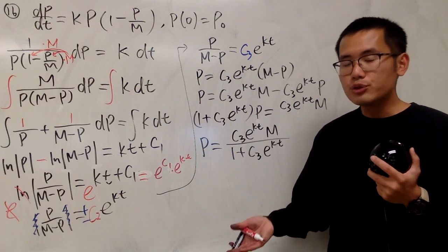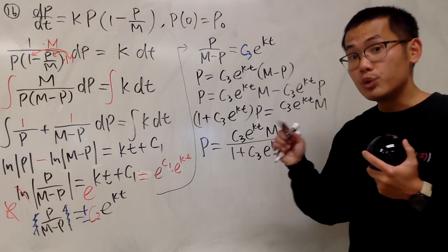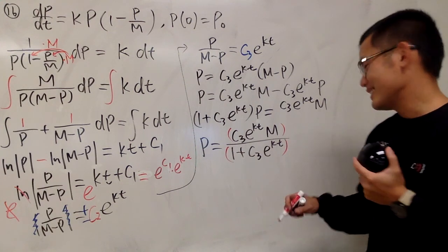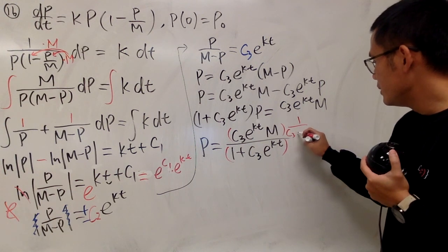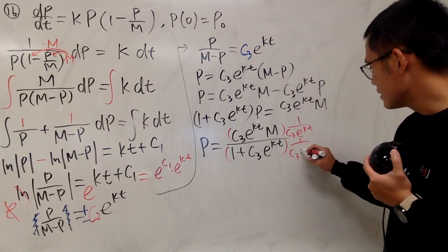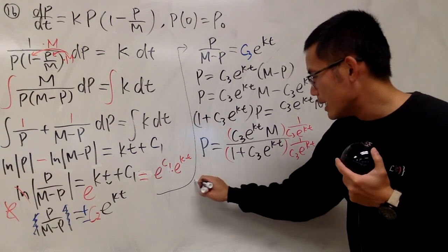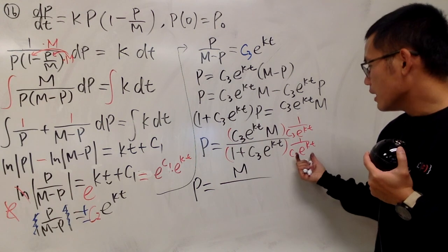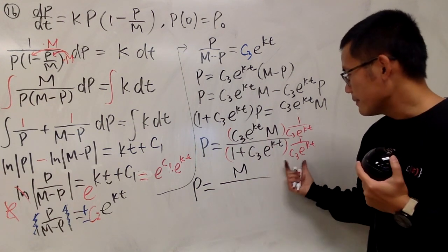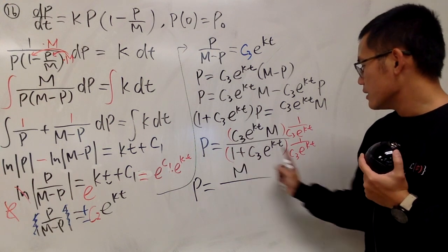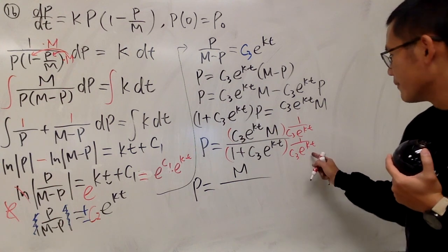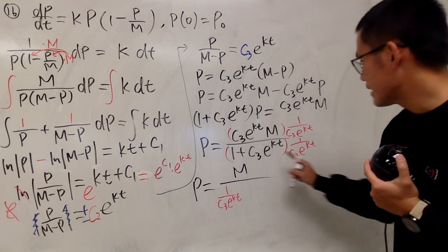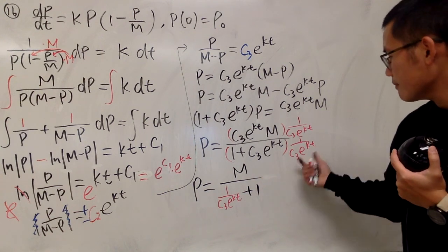So this is pretty much it, but usually we'd like to have just one e^(kt) part. To do so, we are going to divide the top and bottom by c₃ e^(kt). So finally, we'll see that p equals m on the top. That's nice, very nice. The bottom, this times that is 1. And this times this, I will write it as 1/(c₃ e^(kt)) plus 1.